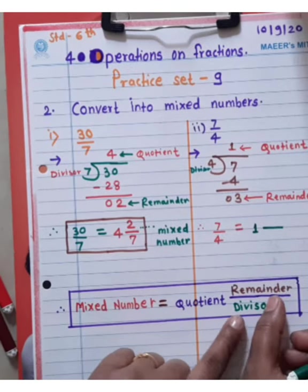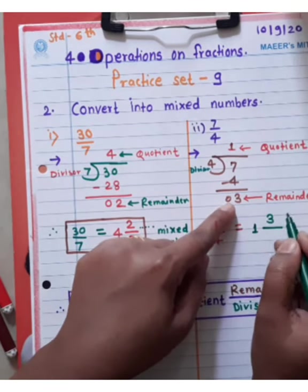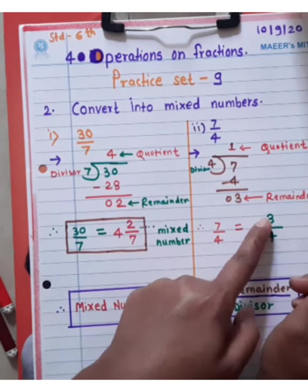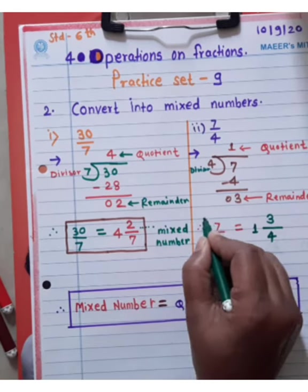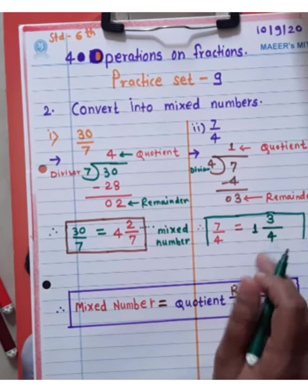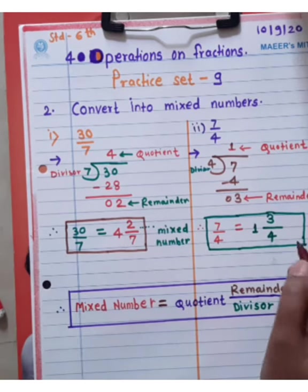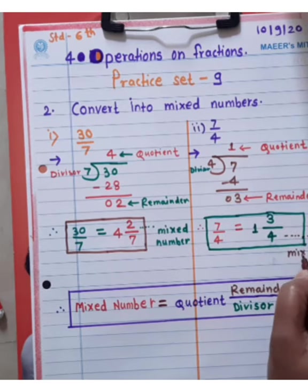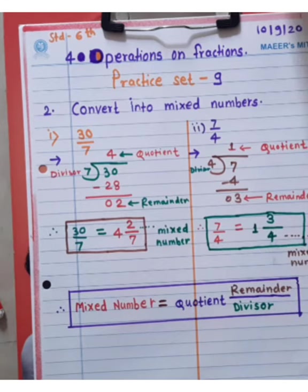Then remainder is 3, and divisor is 4. So the fraction is 1 and 3/4. This is the mixed number. Do you understand student?